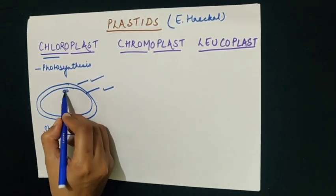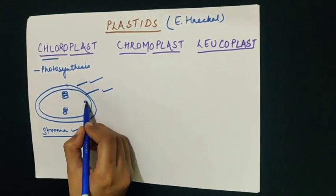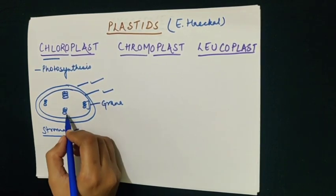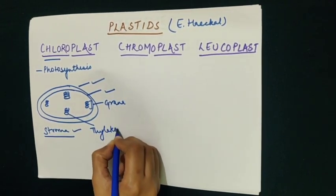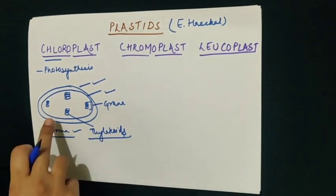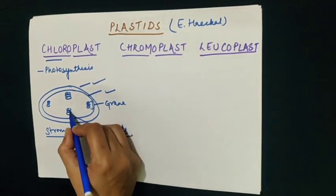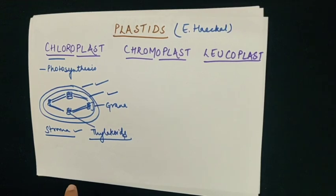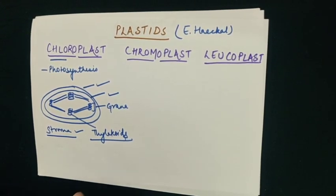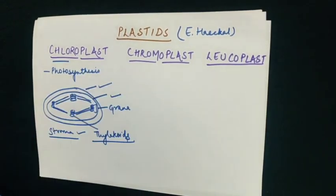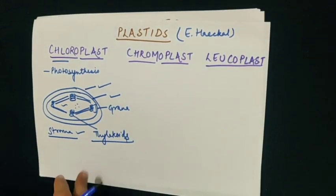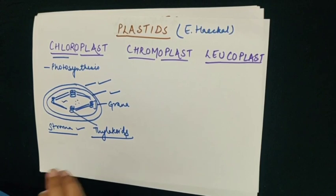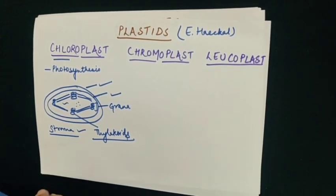Other than stroma, the chloroplast has also got membranous structures. All these structures together are called grana, and these individual disc-like structures are called thylakoids. These are responsible for the process of photosynthesis and are linked together by structures called stromal lamellae. The stroma of the chloroplast also has DNA and ribosomes, and since it has its own DNA and ribosomes, chloroplast is also called a semi-autonomous cell organelle.